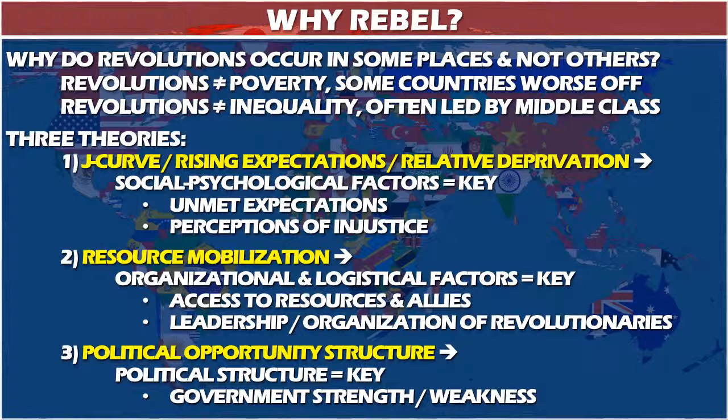Very often revolutions happen in relatively or moderately developed countries, led not by the bottom of the social pyramid, but by the class just below the ruling class. How can we explain why they occur some places and not others? There are basically three general theories developed over the last 50 years.